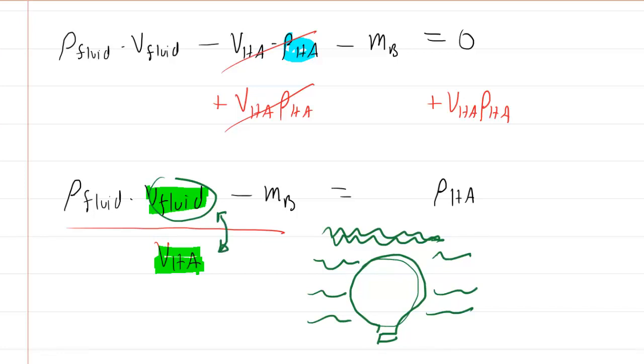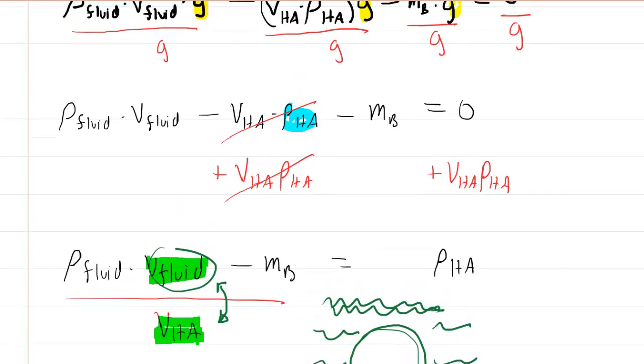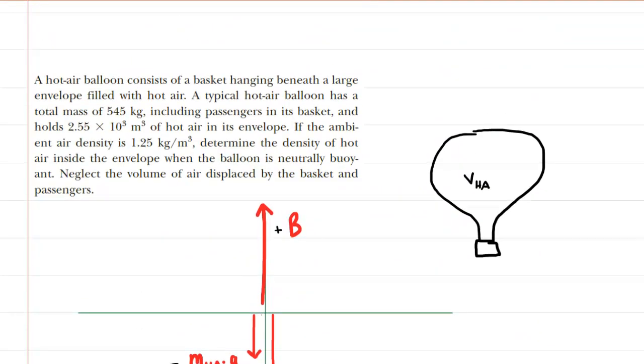So we'll go back up and grab the numbers. We need three numbers: the density of the fluid, the volume of the balloon, and the mass of the balloon. Here's the total mass of the balloon. Here is the volume of air inside the balloon. And then this is the density of the surrounding air in which the balloon is floating.